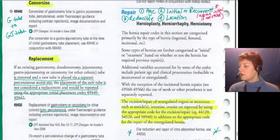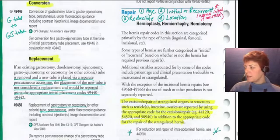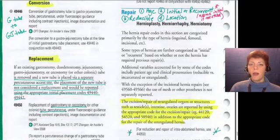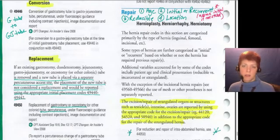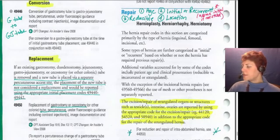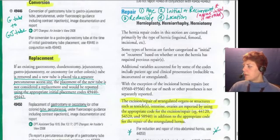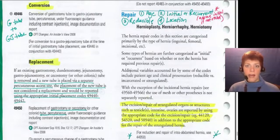The hernia codes are in the digestive system toward the end, and the guidelines are all up at the top. The question is: what do I need to pull out of the report to get to the correct code? In our classes, we teach you to abstract certain variables — number one is age. You want to pull that out of the report.